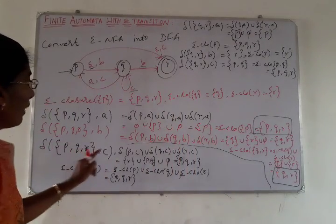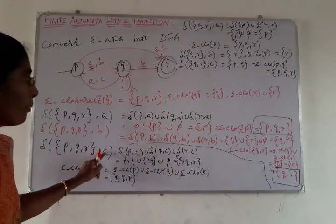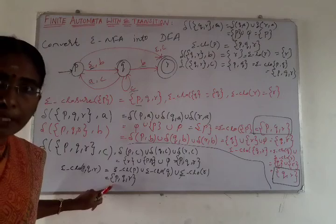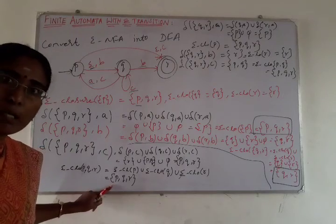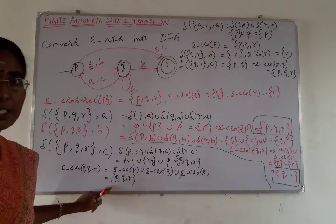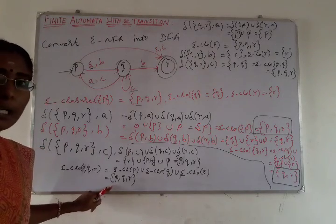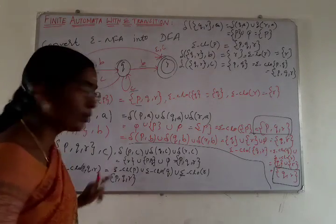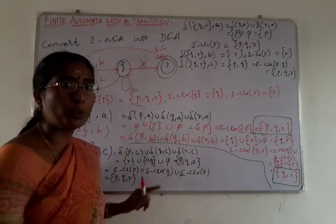Next, PQR on input C: δ(P, Q, R) on C equals PQR — that is also a self-transition. For input C as well, we get a self-transition back to state PQR.